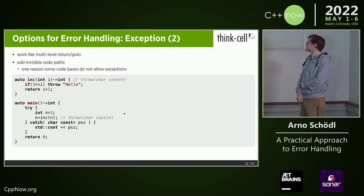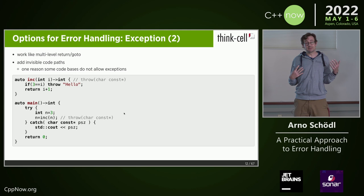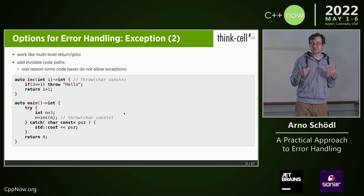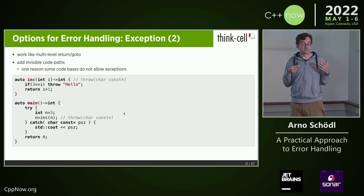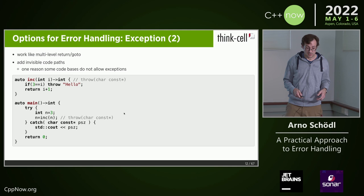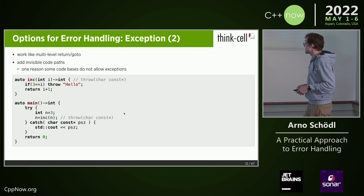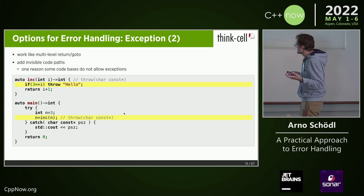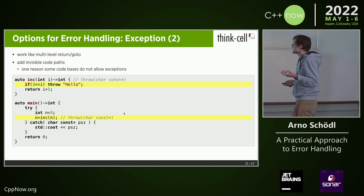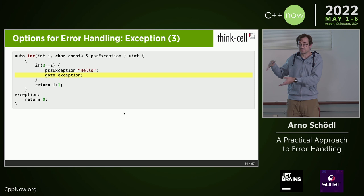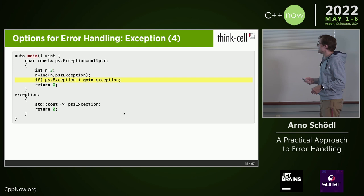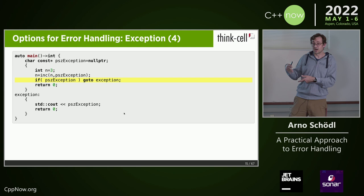What's the problem with exceptions? If I'd be a little bit mean, I'd say they work a bit like a multi-level return goto. They add invisible code paths to your code — wherever an exception is thrown, you have another code path. That's a reason some code bases don't like exceptions. You could say here are two functions, and every time they throw it's a little bit like a goto. It's a side channel where you can leave your function, and similarly when you receive that exception you're jumping into the catch code.